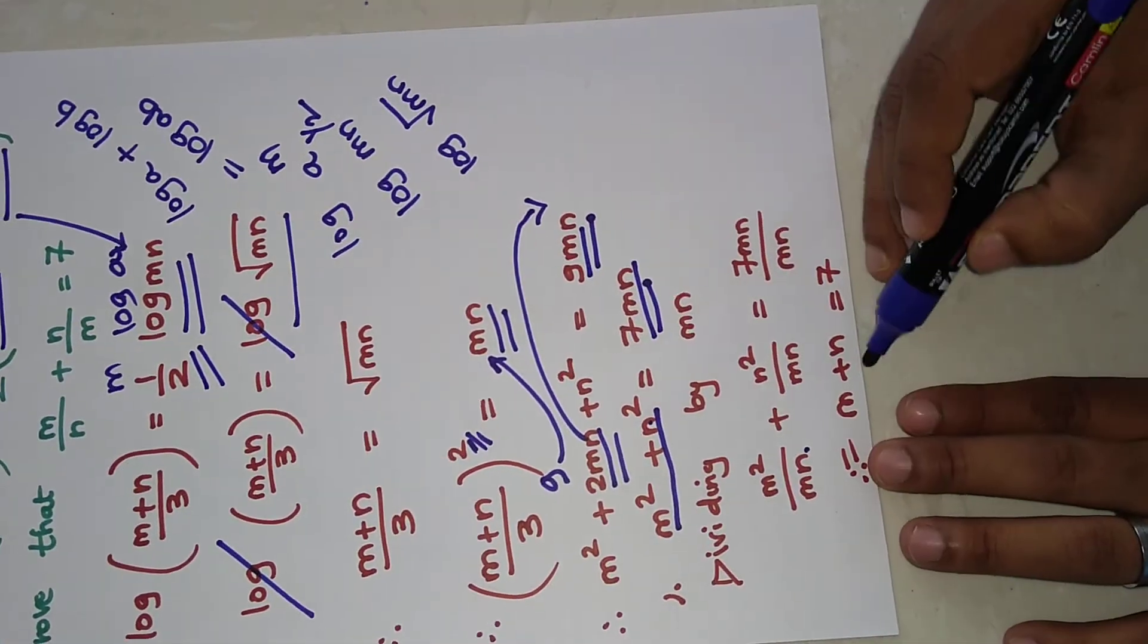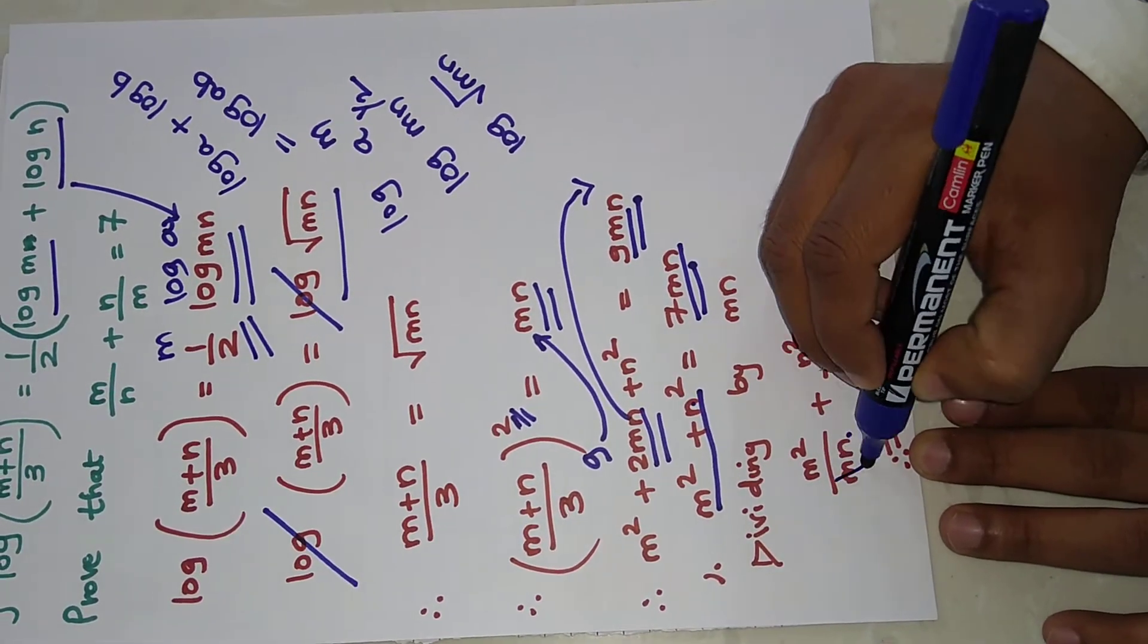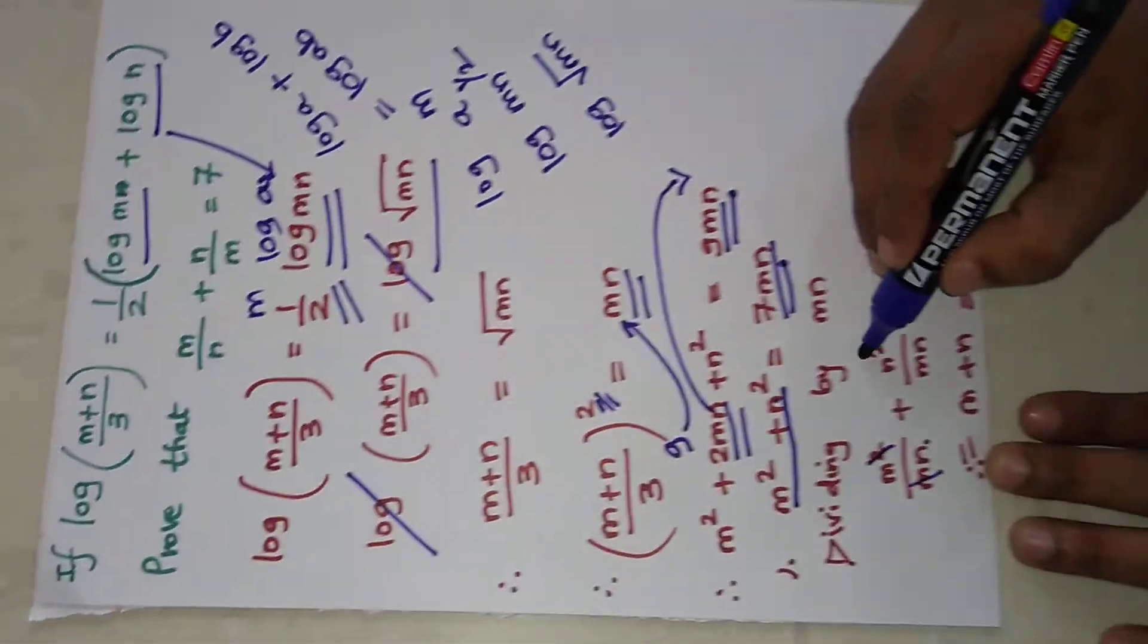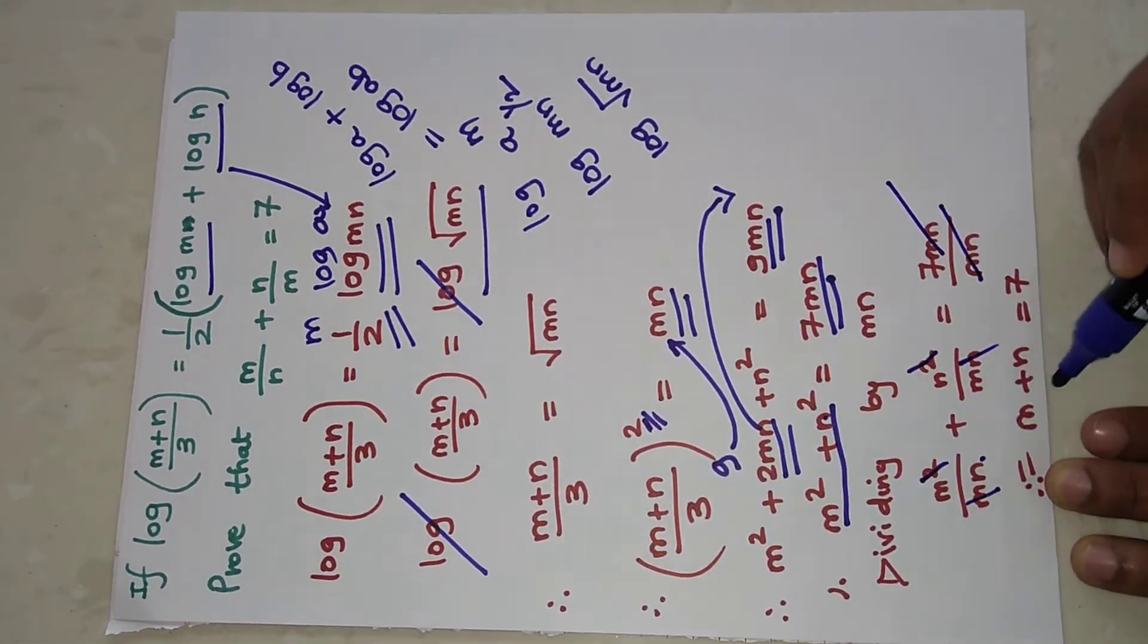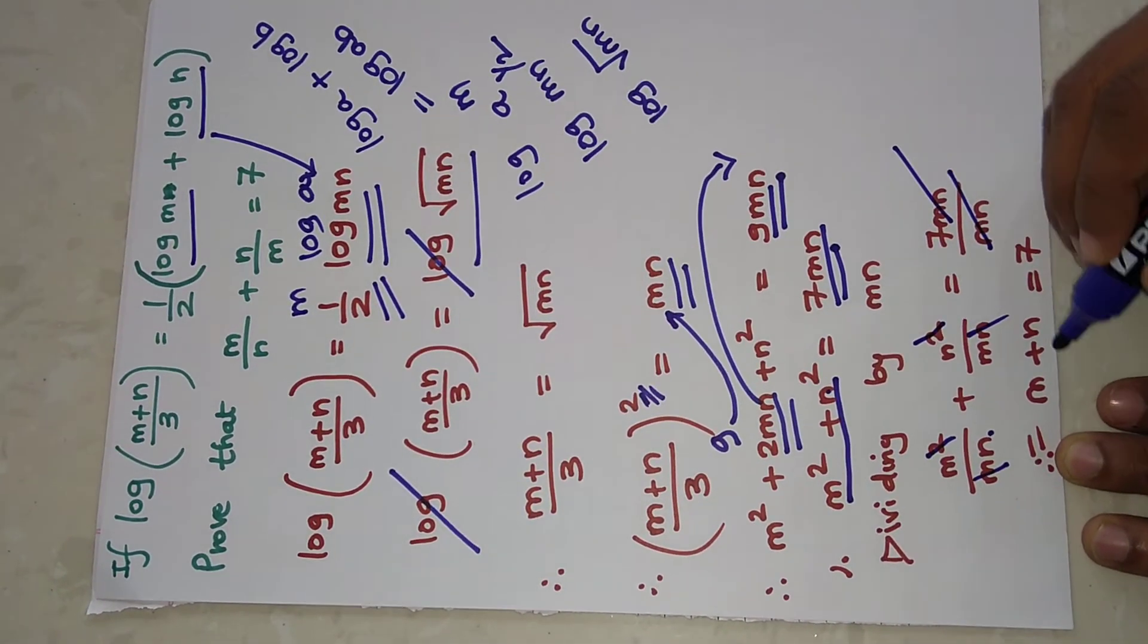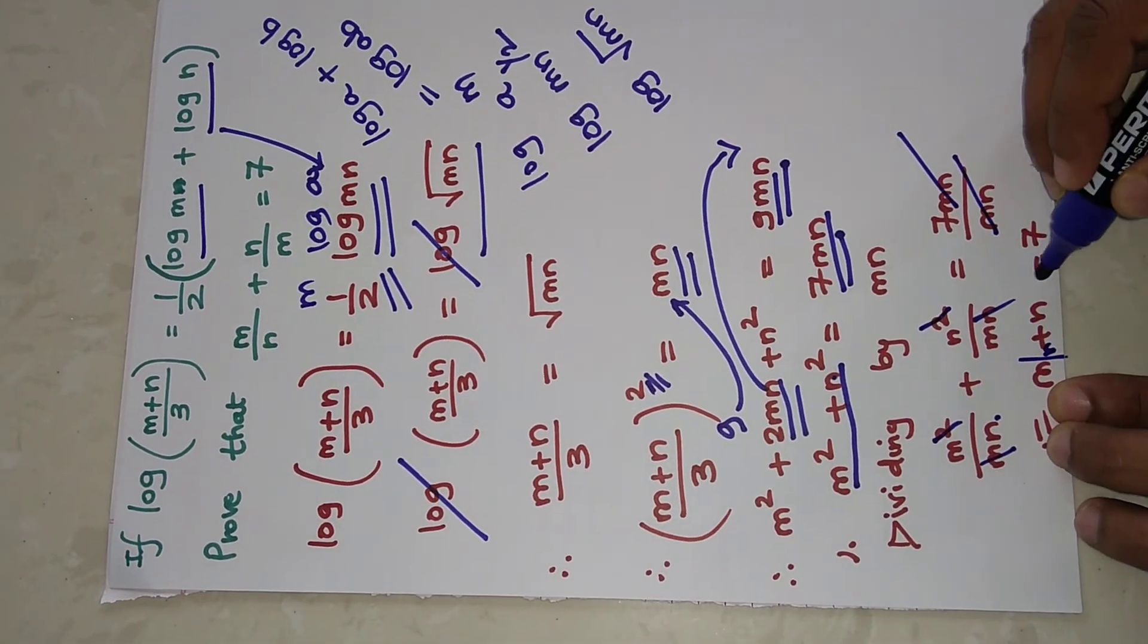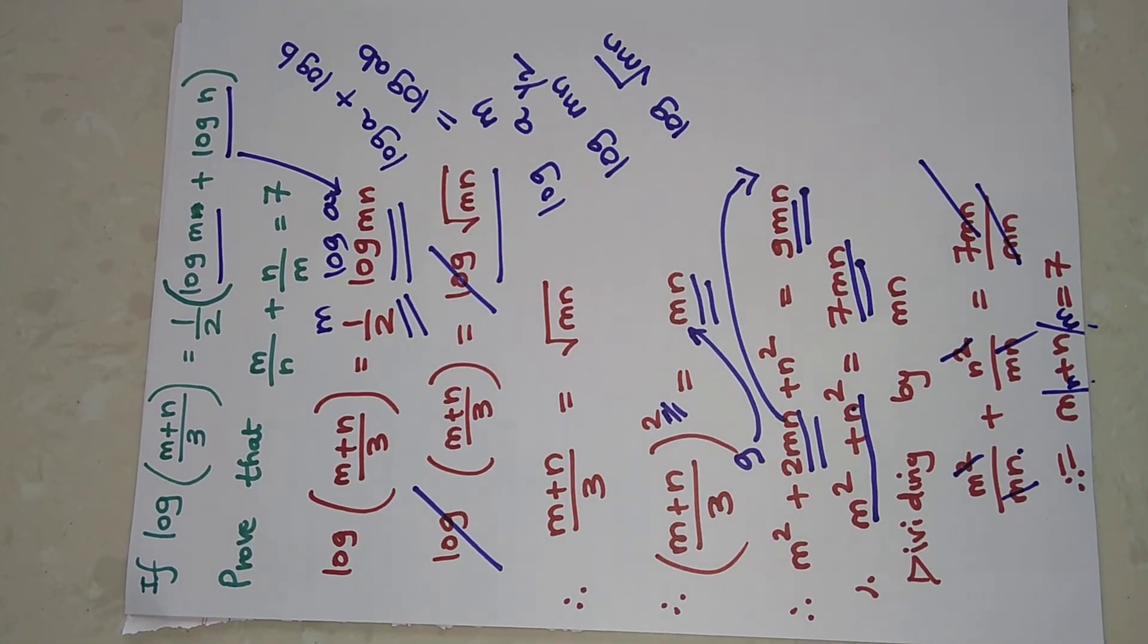We will get the answer as m/n + n/m equals 7, because this m and this n will get cancelled out. This will cancel, it will be m/n and n/m, and this will be equal to 7. So m/n plus n/m equals 7. Thank you.